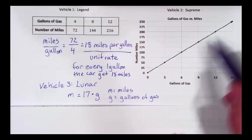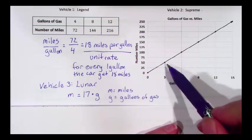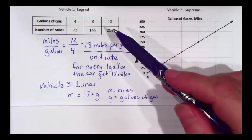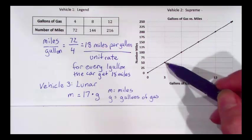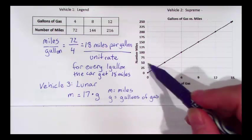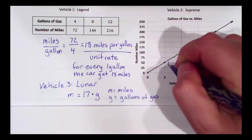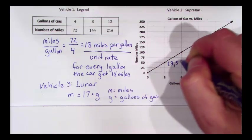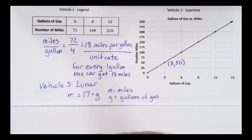If we look at our graph, the points on our graph tell us something very similar to the table. If I look at this point, it says for three gallons of gas, I can go fifty miles. This would be the point three fifty.